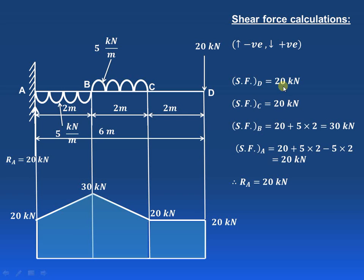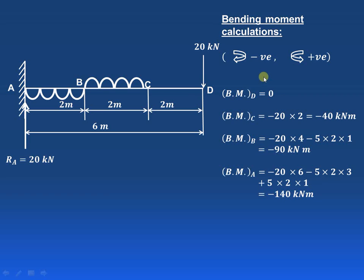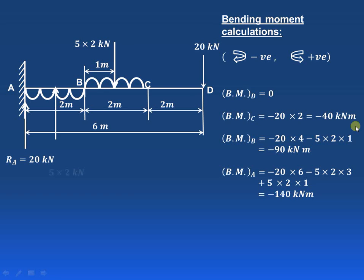Now let us try to understand how to draw the bending moment diagram. The conventions used here for bending moment calculations are clockwise negative and anticlockwise positive. At point D the bending moment will be 0 because there is no force acting on the right-hand side of D. For bending moment calculation we will always convert the uniformly distributed load into a point load.